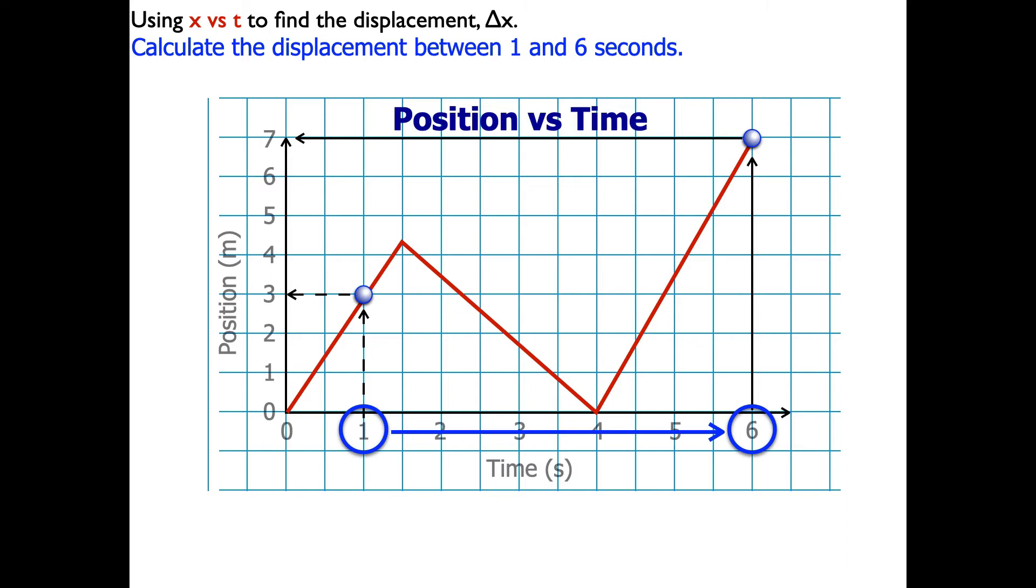So you've got to remember whenever you're finding the displacement, that's a change in position, which is always the final position minus the initial position. The final position is the one that occurs later in time. So this is the final position, and the initial position is the one that occurs earlier in time.